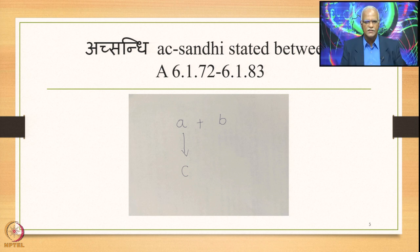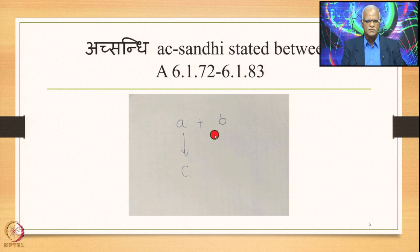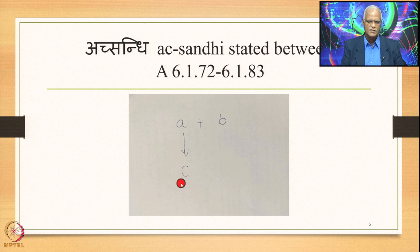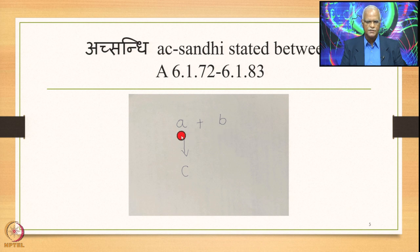The Ekasthanika Ekadesha can be diagrammatically represented where you have A immediately followed by B, both in the Samhita mode in close proximity. So A plus B is the input. Now this A, the Sthani, gets substituted by C, the Aadesha, in the environment of A immediately followed by B. So A plus B is the input and the output is C plus B.